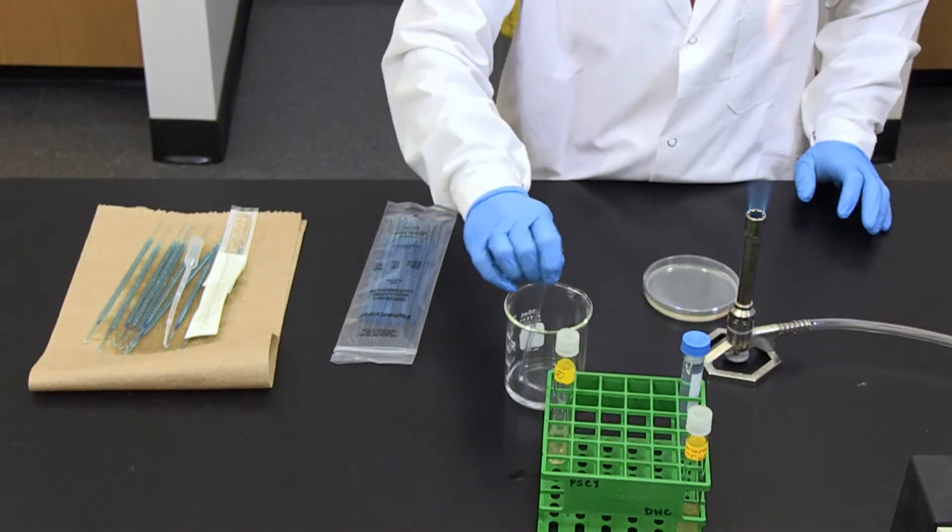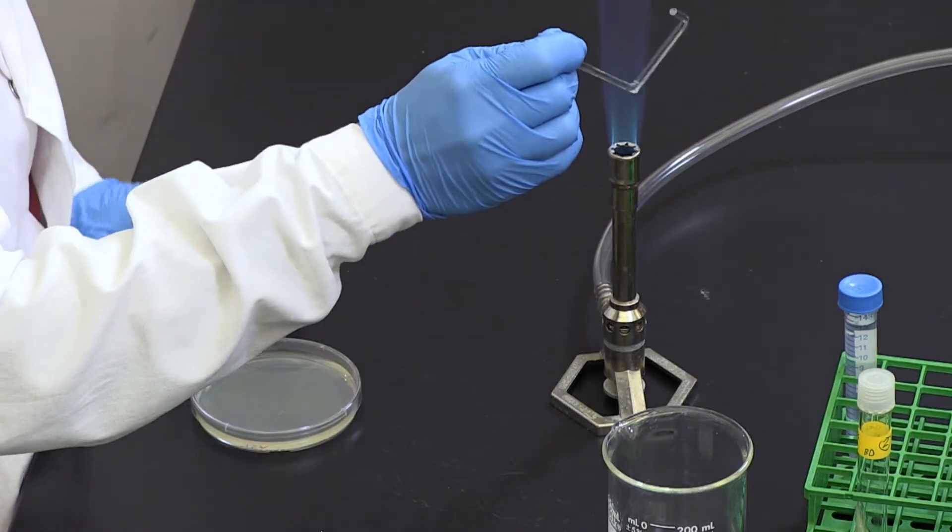Immerse the cell spreader in the ethanol beaker and re-sterilize it.